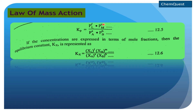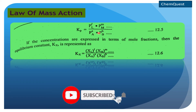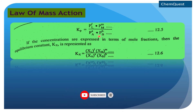اگر ہم concentration کو mole fraction کی terms میں represent کریں تو جس طرح pressure کے لیے symbol p use ہوتا ہے، mole fraction کے لیے symbol x use ہوتا ہے۔ Simply ہر جگہ p کو x سے replace کر دیں، تو Kx is equal to: xL raised to power l × xM raised to power m divided by xA raised to power a × xB raised to power b.